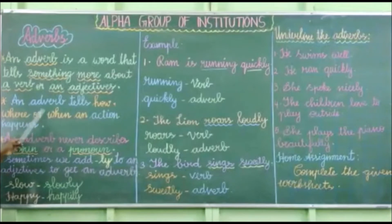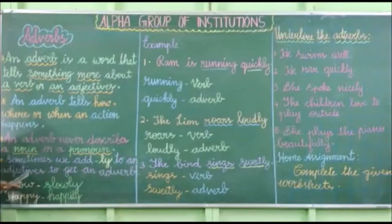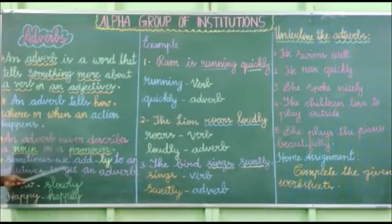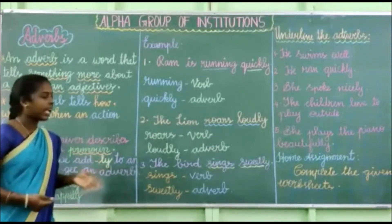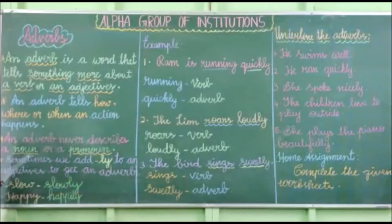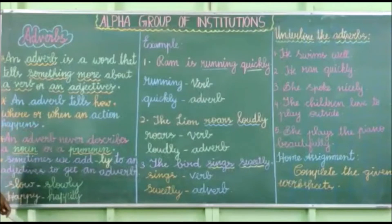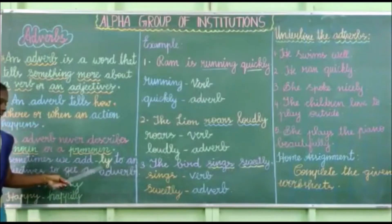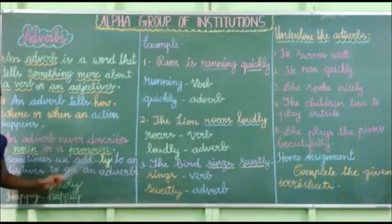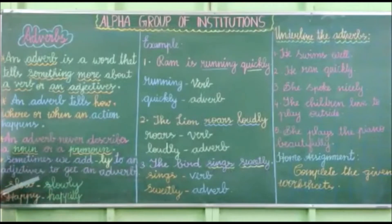An adverb tells how, where, or when an action happens. How tells the manner, where tells the place, and when tells the time of the action. An adverb never describes a noun or pronoun — it can only describe a verb or an adjective. Sometimes we add -LY to an adjective to get an adverb.